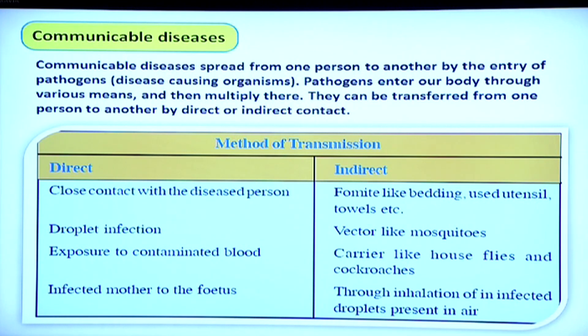Communicable diseases spread from one person to another by the entry of a pathogen — the disease-causing organism. Pathogens enter our body through various means and then multiply inside the body. They can be transferred by direct or indirect contact. Direct ways include close contact with the diseased or infected person, and droplet infection — infections of our respiratory tract are mostly spread through droplets. Examples are common cold and TB.